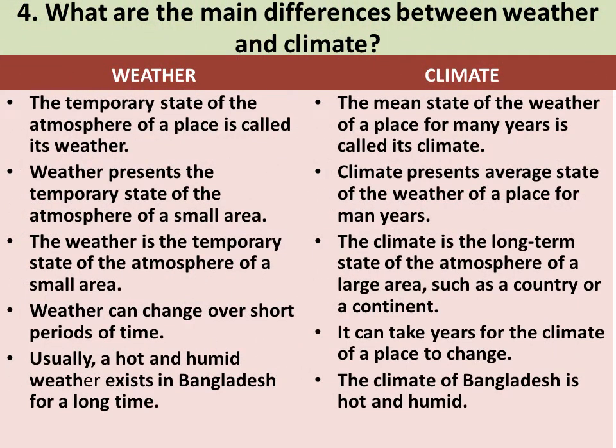Question 4: What are the main differences between weather and climate? Here are 5 points differentiating weather and climate. Difference 1 — Weather: The temporary state of the atmosphere of a place is called its weather. Climate: The average state of weather of a place for many years is called its climate. Difference 2 — Weather presents the temporary state of the atmosphere of a small area. Climate presents the average state of the weather of a place for many years.